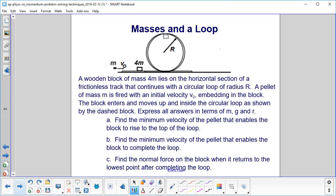Masses and a loop. A wooden block of mass 4m lies on the horizontal section of a frictionless track that continues with a circular loop of radius r.